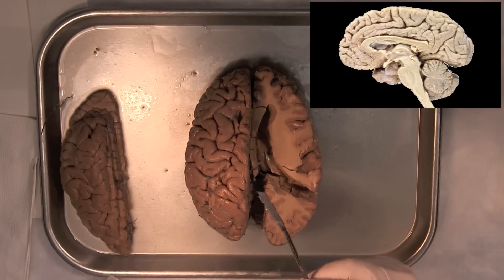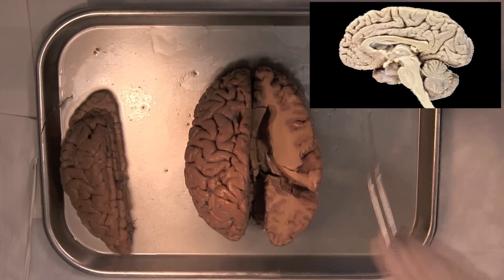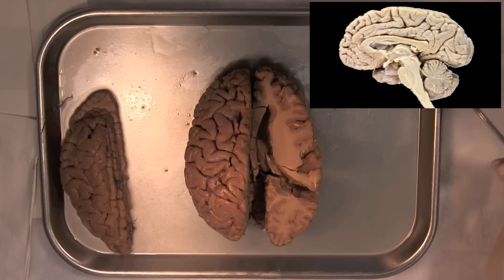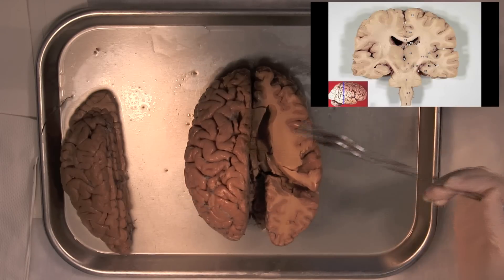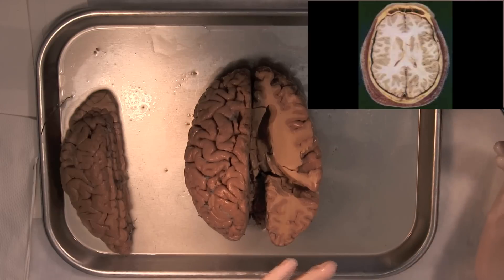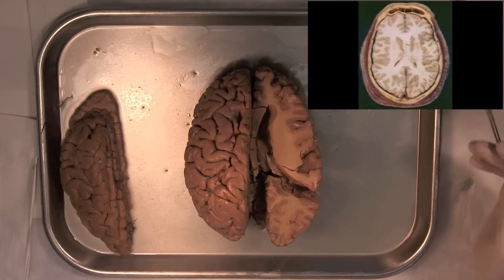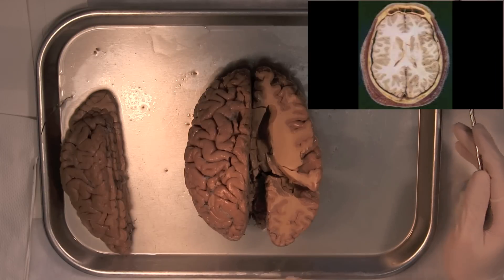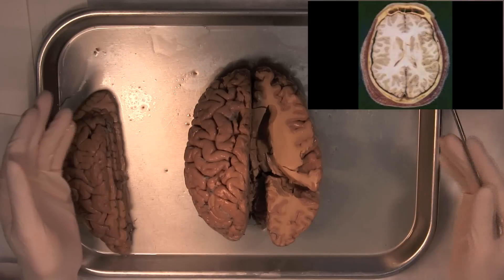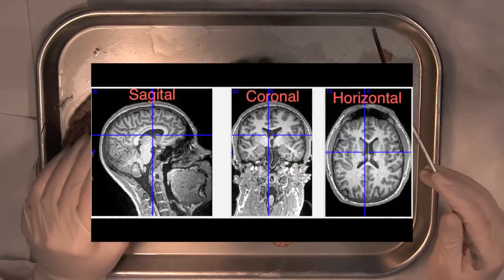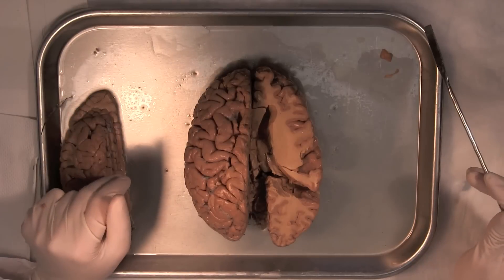A sagittal cross-section cuts across the brain lengthwise — you can think of it like cutting a hot dog bun. A coronal slice cuts it like a loaf of bread, so along this line. And finally, a horizontal slice, unsurprisingly, cuts along the horizon of the brain. Horizontal slices are also referred to as axial slices, so just keep that in mind — you might hear it either way. So again, we have sagittal, coronal, and horizontal or axial slices.